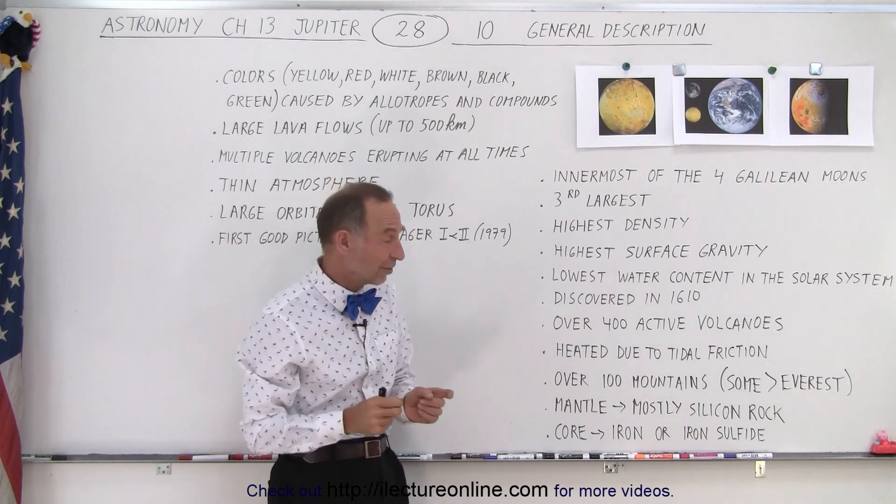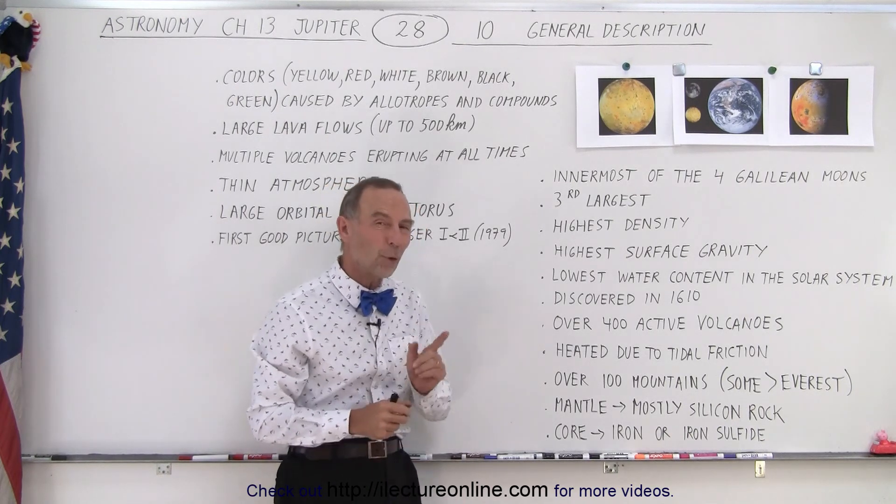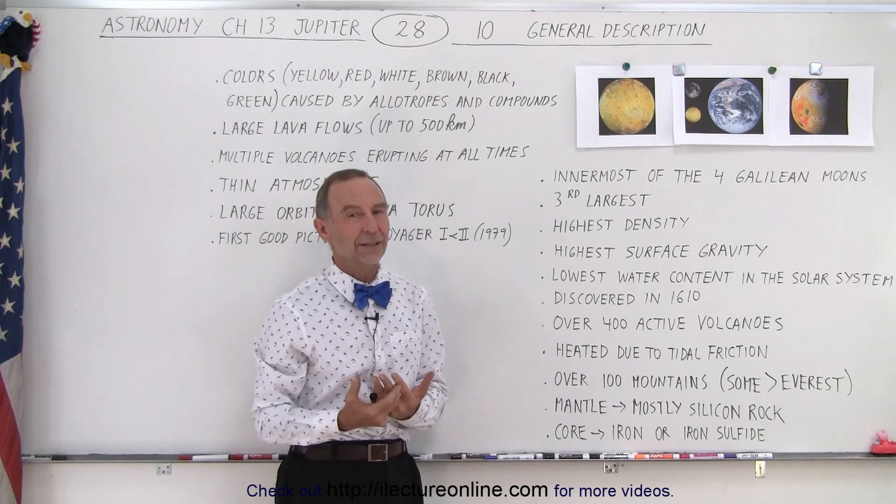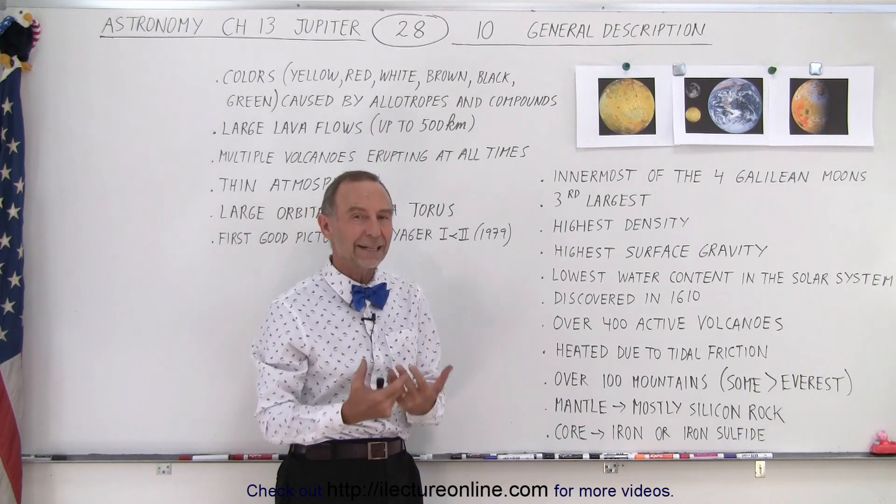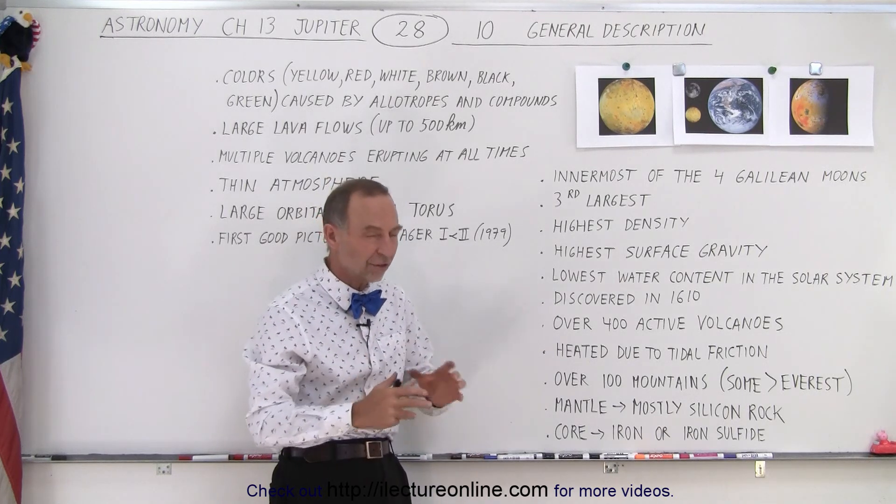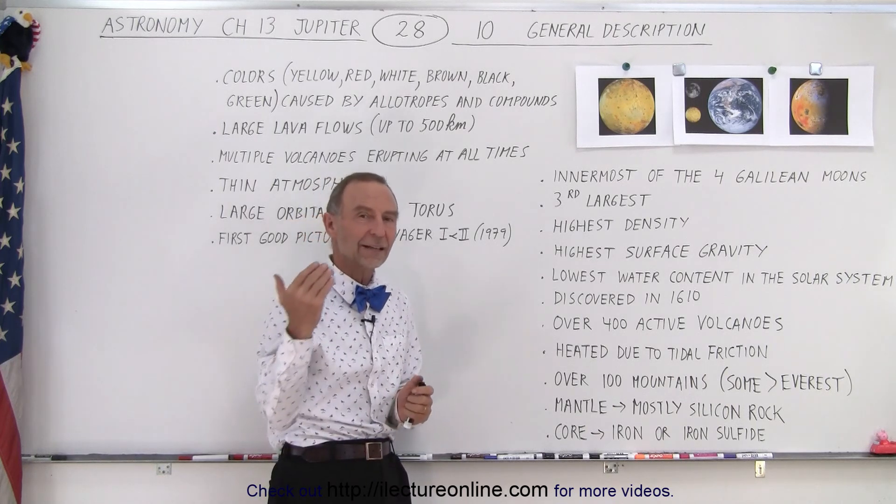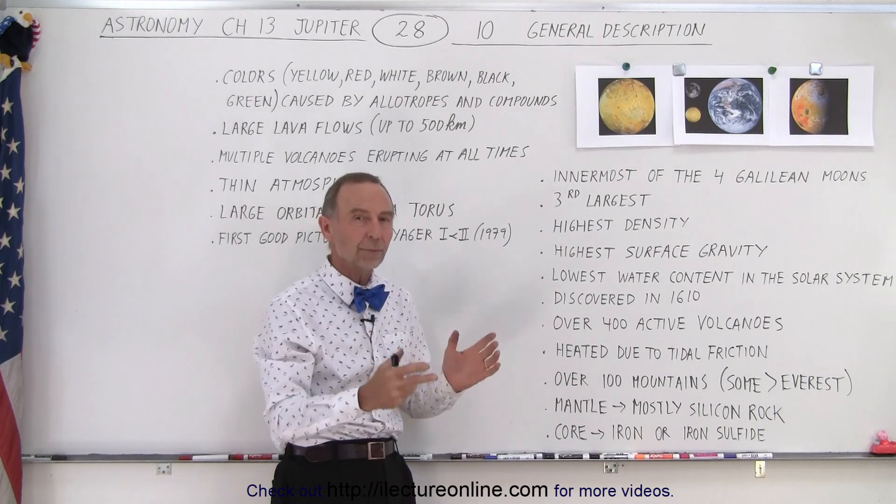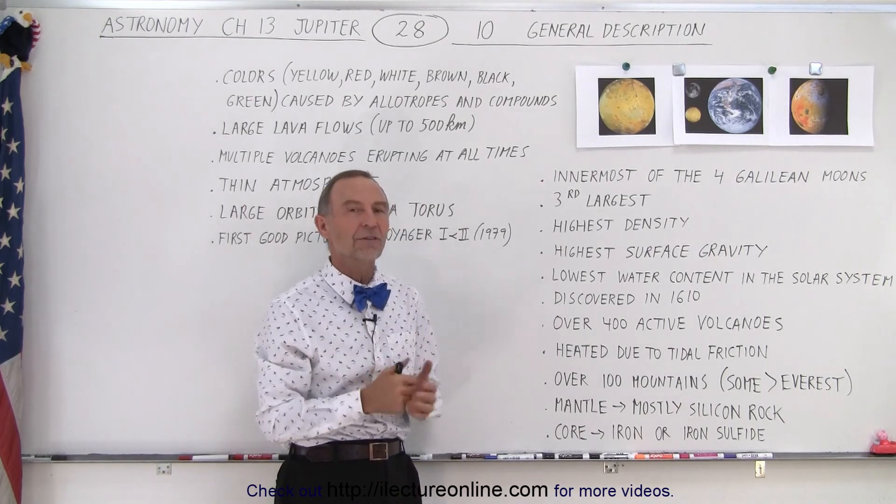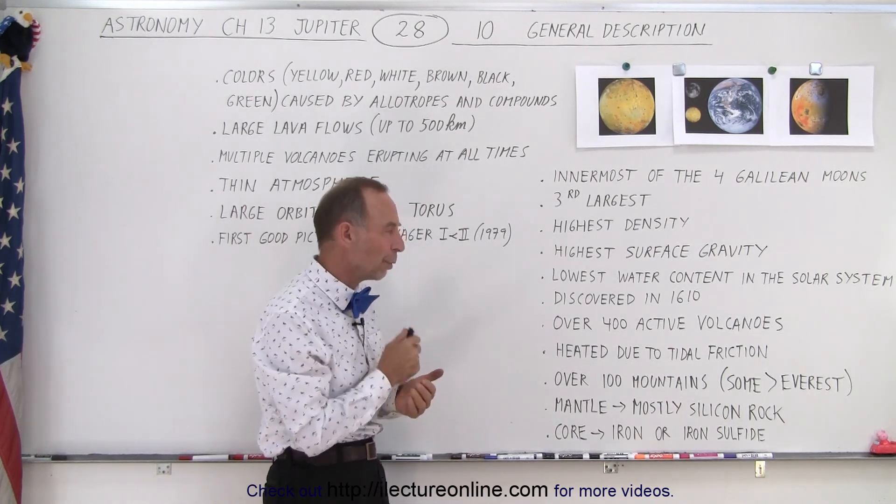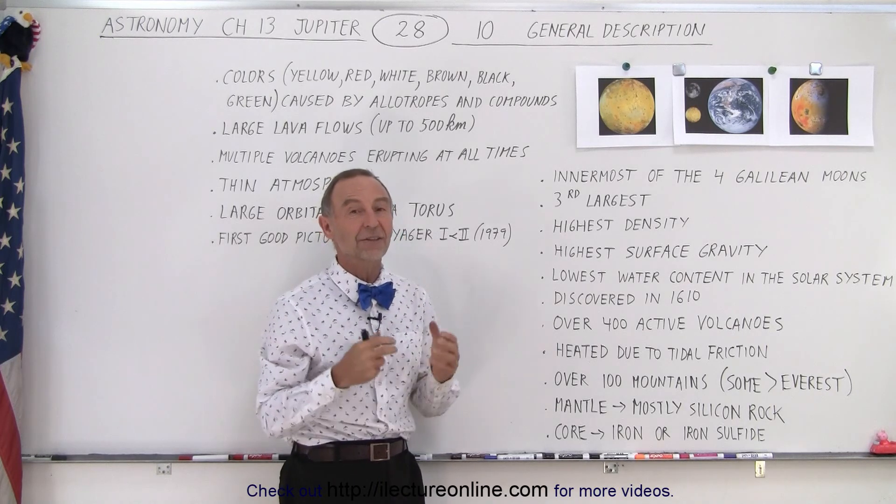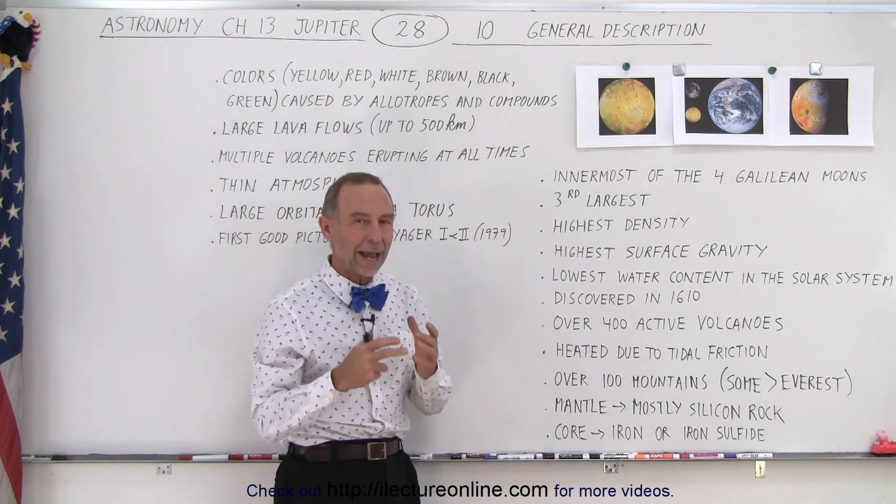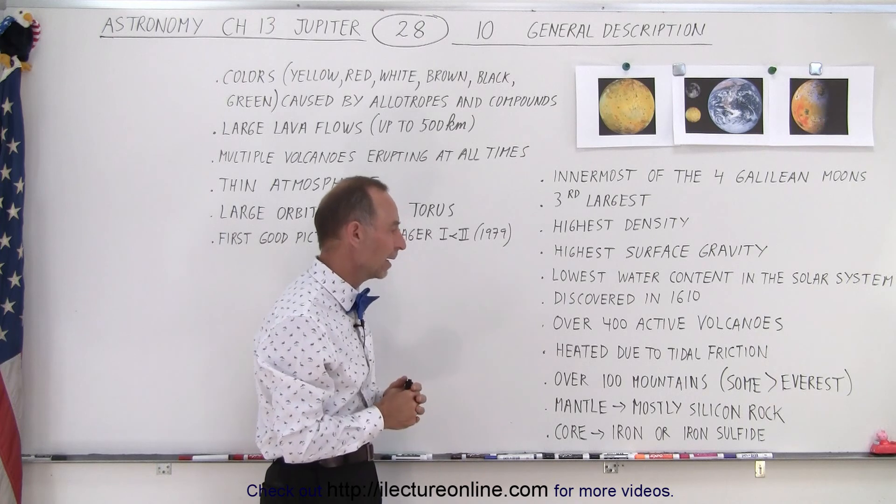What's interesting is that it has over 400 active volcanoes. It is the most volcanically active body in the solar system by far. Every time we have a satellite that flies past Io and takes pictures, we see multiple volcanoes erupting all at the same time. I believe at one point, one of the pictures that was taken, they saw nine volcanoes that were actively erupting at the same time.